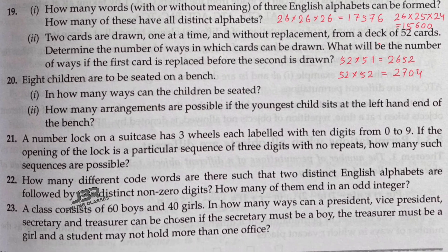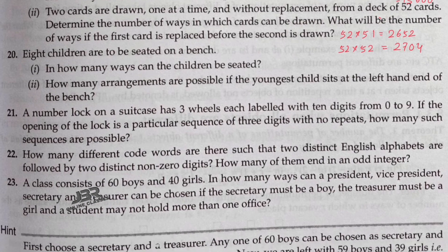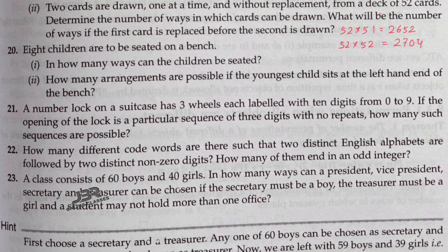Sum number 20: Eight children are to be seated on a bench. In how many ways can they be seated? For the first child we have eight choices, for the second seven, for the third six, and so on. So the answer is 8! = 8 × 7 × 6 × 5 × 4 × 3 × 2 × 1 = 40,320.